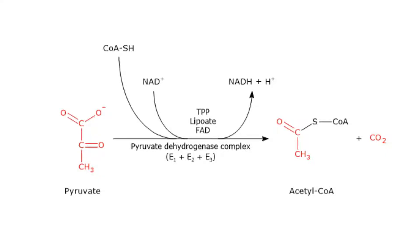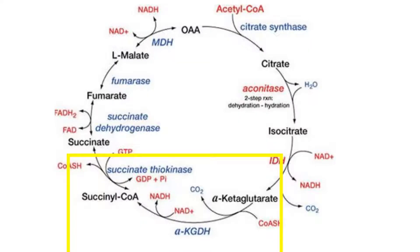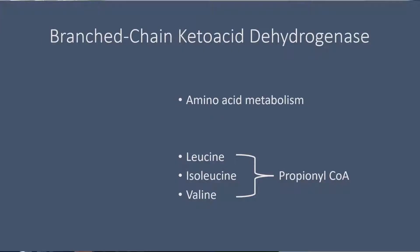The enzyme pyruvate dehydrogenase, or PDH, plays a critical role in glucose metabolism. It catalyzes the reaction that converts pyruvate to acetyl-CoA. The enzyme alpha-ketoglutarate dehydrogenase catalyzes one of the steps in the TCA cycle — specifically, the reaction from alpha-ketoglutarate to succinyl-CoA.